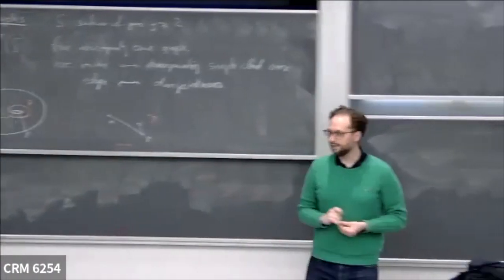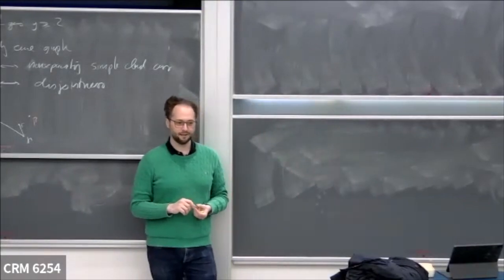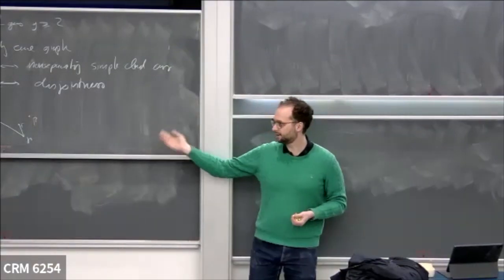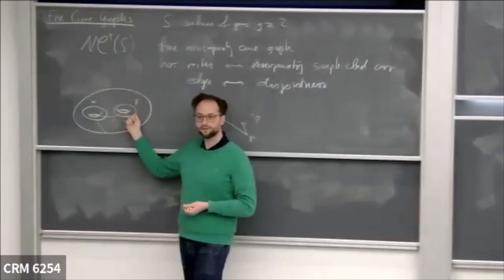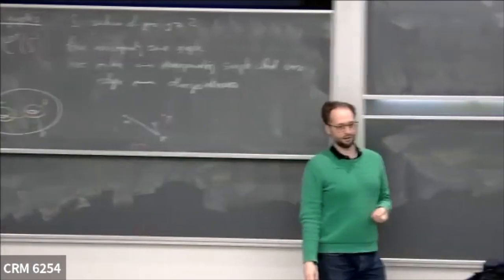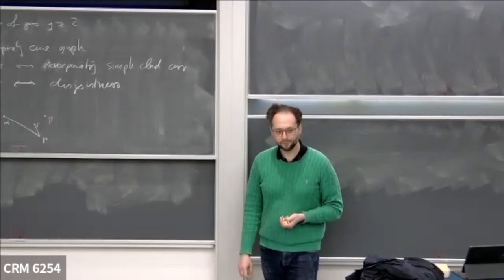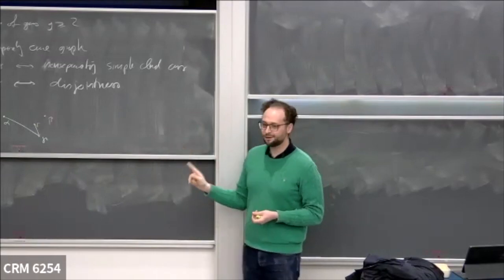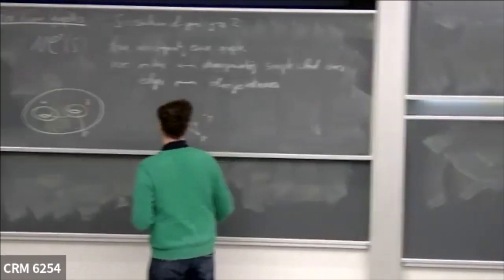We're in a conference for huge groups — this is a huge graph. Where the original curve graph was already locally infinite, this thing is locally uncountable. If you look at the link of a curve, it is all the curves in the complement, of which there are many. So this is unreasonably large. However, this is good news because we have an unreasonably large group acting on it. So we want an unreasonably large complex to try and capture something about it.